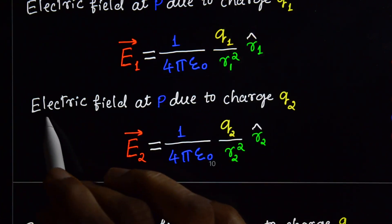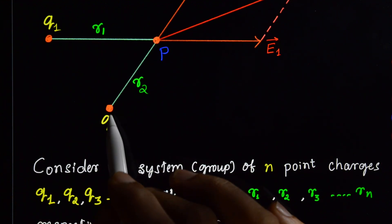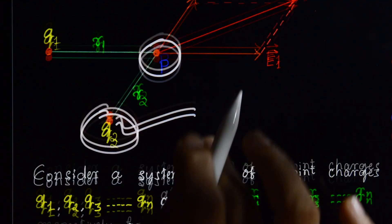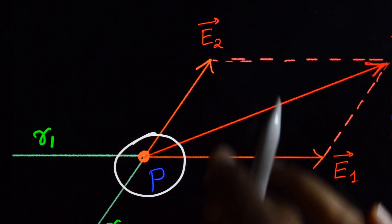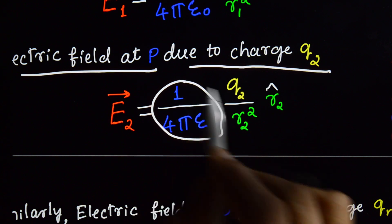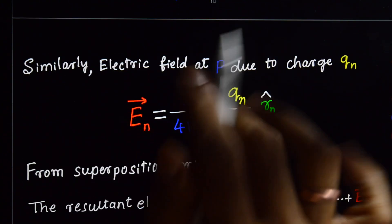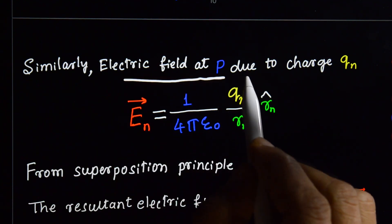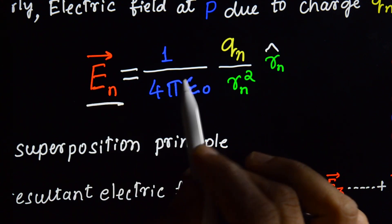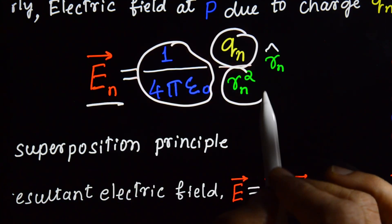The electric field at point P due to charge q2 is: E2 = (1/4πε₀) · (q2/r2²) · r̂2. Similarly, the electric field at P due to charge qn is: En = (1/4πε₀) · (qn/rn²) · r̂n.